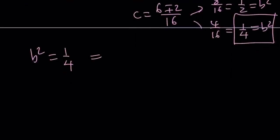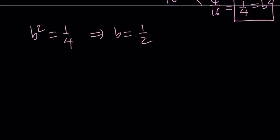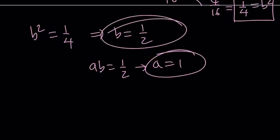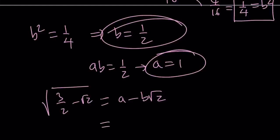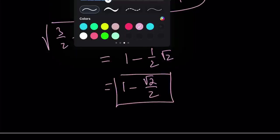So, b equals 1/2. Remember, a times b is also 1/2. With b = 1/2 and ab = 1/2, this means a is equal to 1. So a equals 1 and b equals 1/2. Remember, our expression was written as a minus b√2. Since a is 1, this becomes 1 minus (1/2)√2. Or, written as 1 minus √2 over 2 as our final answer. That's the end of the first method.